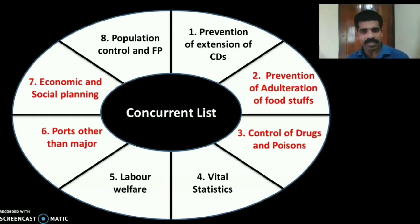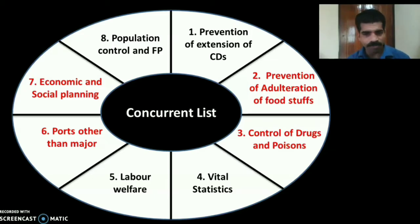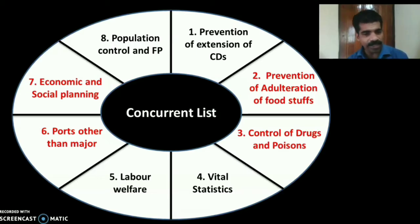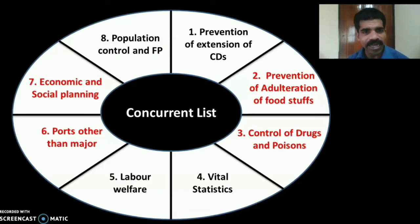The Concurrent List is the responsibility of both Central and State Governments. It includes: Prevention of Extension of Communicable Diseases, Prevention of Adulteration of Foodstuffs, Control of Drugs and Poisons, Vital Statistics, Labour Welfare other than Mines and Oil Fields, Ports other than major ports and during Quarantine, Economic and Social Planning, and Population Control and Family Planning. These are the eight functions under the Concurrent List.